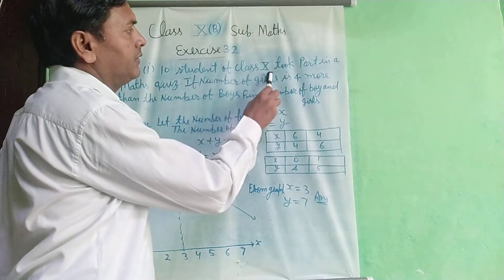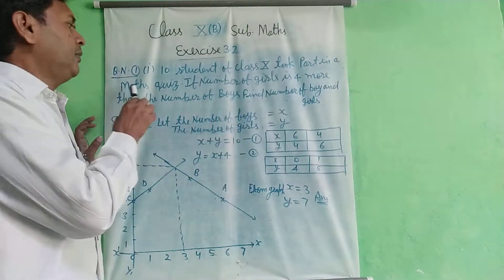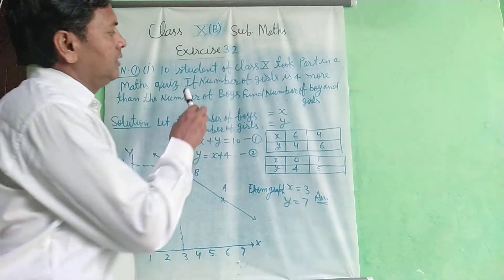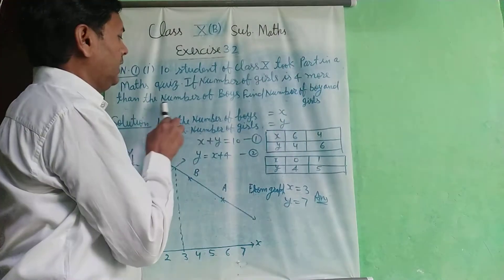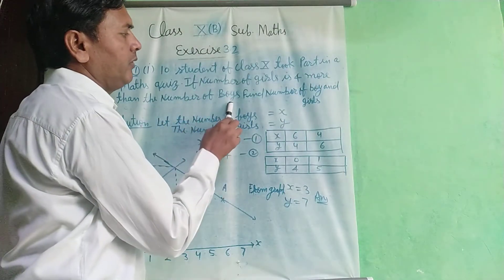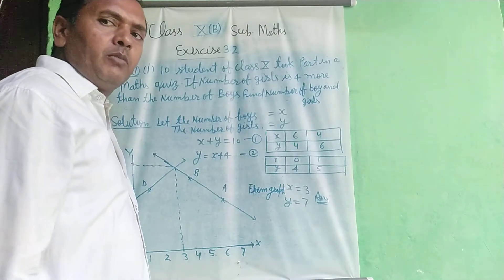10 students of class 10 took part in a math quiz. If number of girls is more than the number of boys, find the number of boys and girls with the help of a graph.